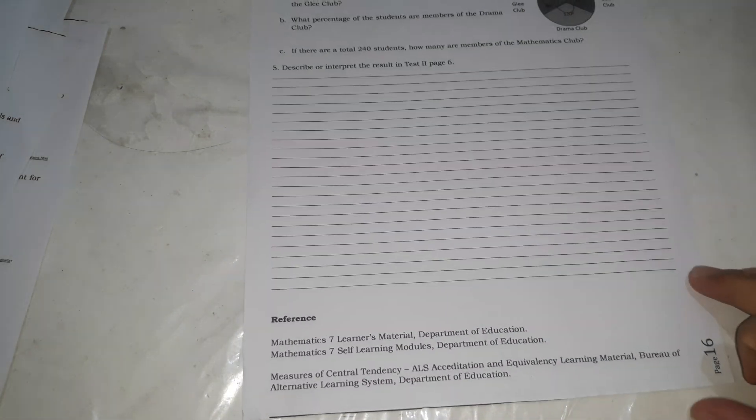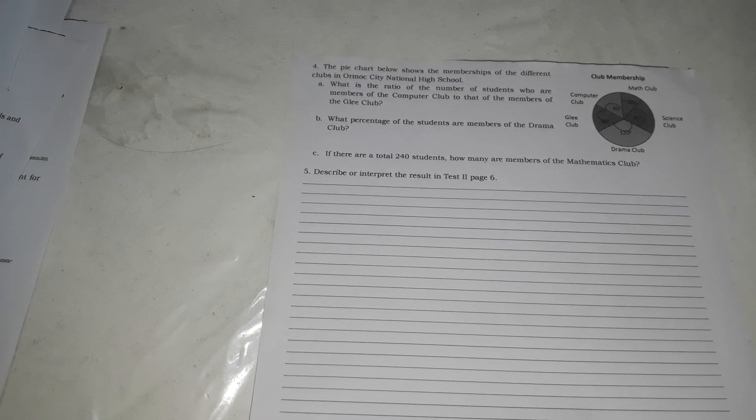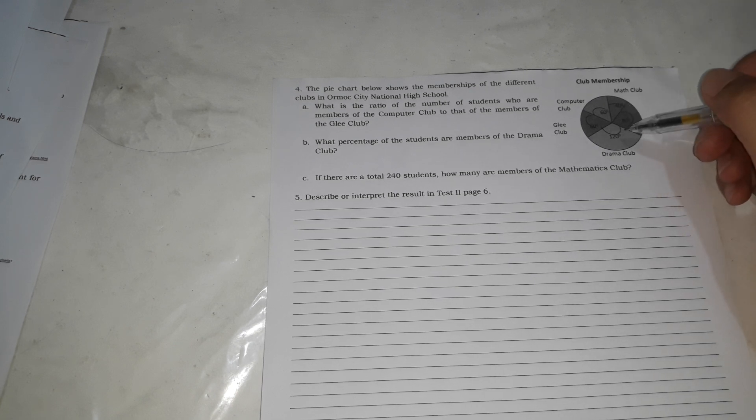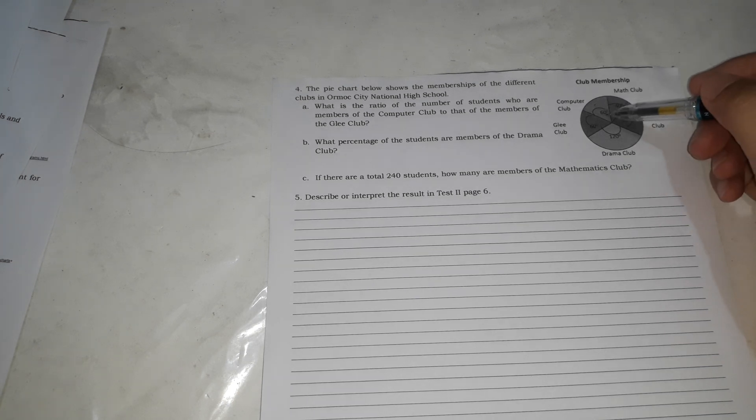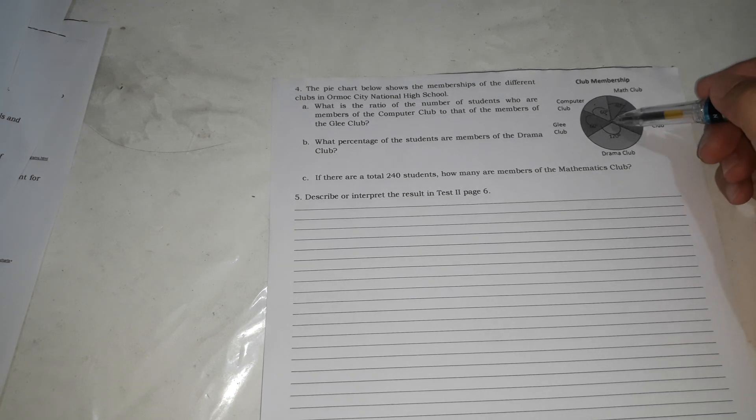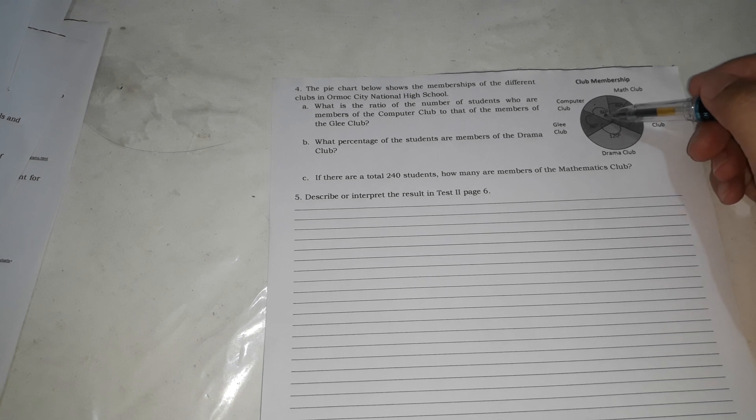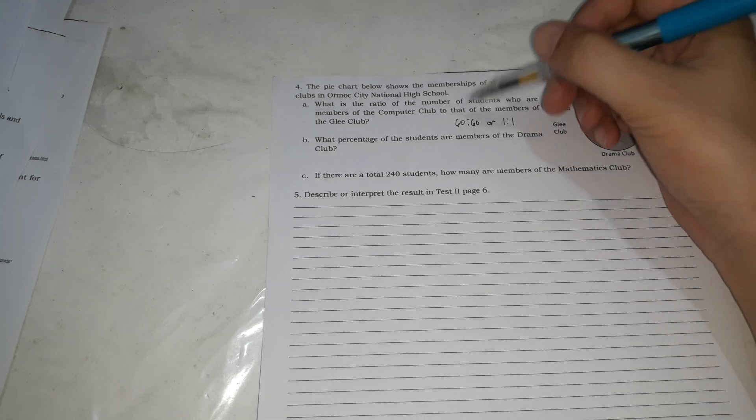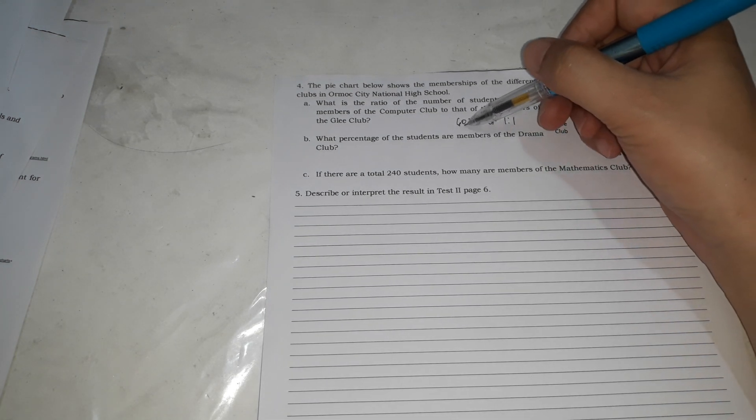Next. The pie chart below shows the membership of the different clubs in Ormoke City National High School. What is the ratio of the number of students who are members of Computer Club to the members of Glee Club? This is the club membership. Computer club, it's 60 degrees to the Glee Club which is 60 degrees. Because they are the same, the ratio could be 60 is to 60 or simply 1 is to 1 because it's the same number. You could simplify this. 1 is to 1.